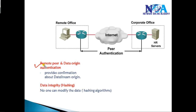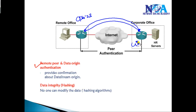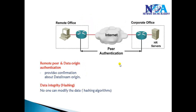Authentication is a method of verifying the peer by using passwords. For example, to build a VPN connection between two locations, we configure a password on both sites, and if the passwords match the connection will be established. Authentication ensures the remote peer is the correct peer we are connecting to, and it also authenticates the data origin. IPSec provides both data origin authentication and remote peer authentication.